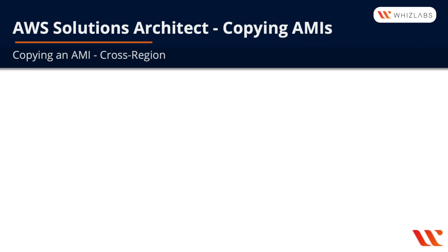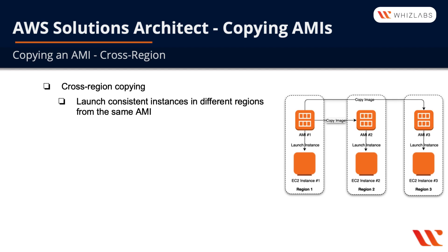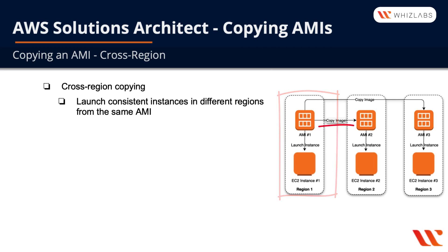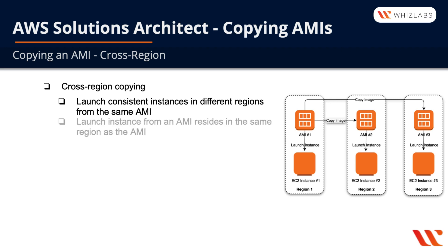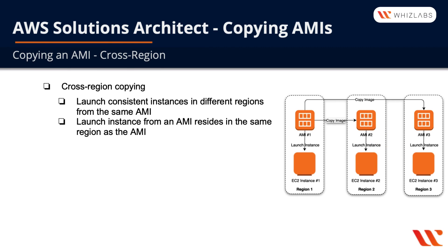Let's talk about cross-region copying of AMIs. One benefit is you can launch consistent instances in different regions from the same AMI. In our diagram we have three regions: region one is the source, and we copy the AMI from region one to region two and region three, then launch instances from each. Those instances are consistent because they're all launched from either the original AMI or exact copies. Note that a launched instance from an AMI must reside in the same region as the AMI, which is why we copy the AMI across regions.